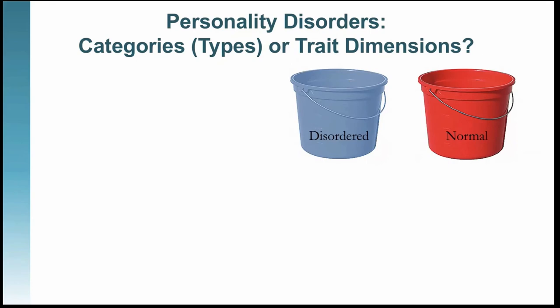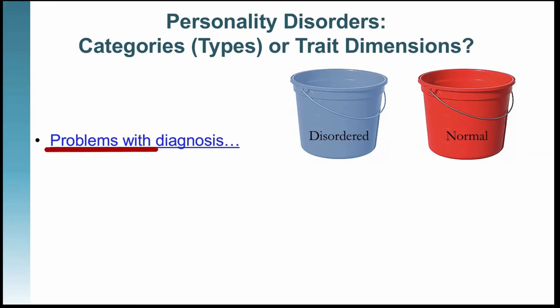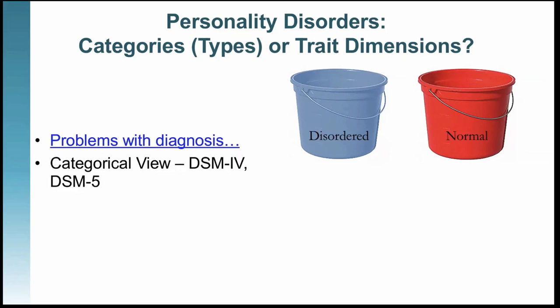One of the problems with this bucket method was the unreliability issue — clinicians weren't making reliable decisions about which personality disorder a specific individual had. There's a link in this PowerPoint I encourage you to watch; it gives more information about the problems with making a diagnosis using a typology, which is how it's been done in all the DSMs, including the DSM-5, even though they thought they were going to switch to a dimensional model.